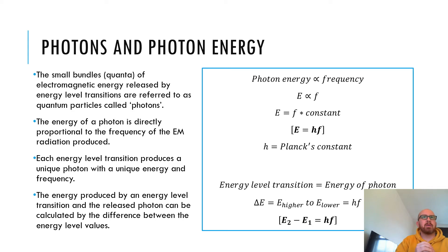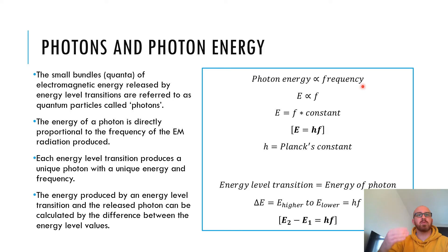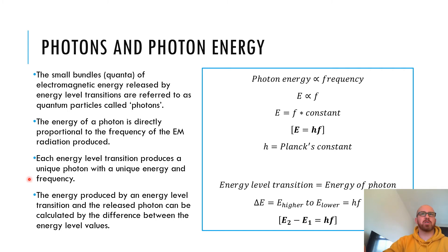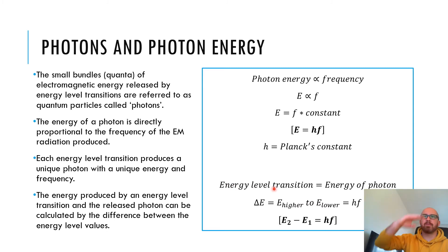The energy of a photon is directly proportional to the frequency of the EM radiation produced. So photon energy is directly proportional to frequency — as photon energy goes up, frequency goes up. E is proportional to F, and as a formula it becomes E equals F times a constant. That constant is Planck's constant, giving us the very important formula E = HF to work out the energy of a photon. Each energy level transition produces a unique photon with unique energy and frequency, and the energy can be calculated by the difference between the energy level values.